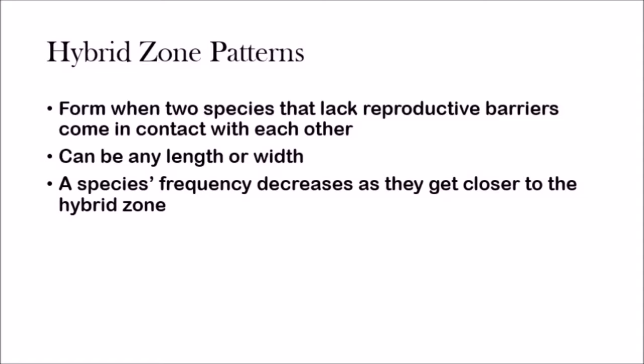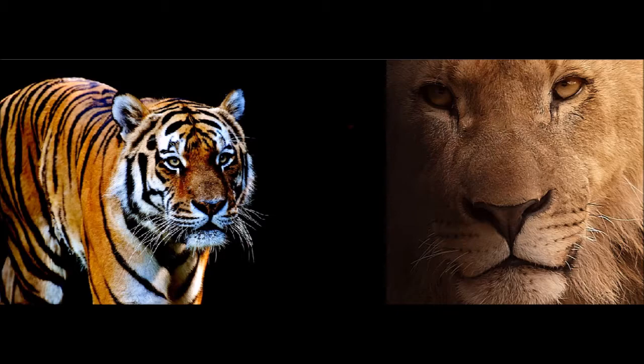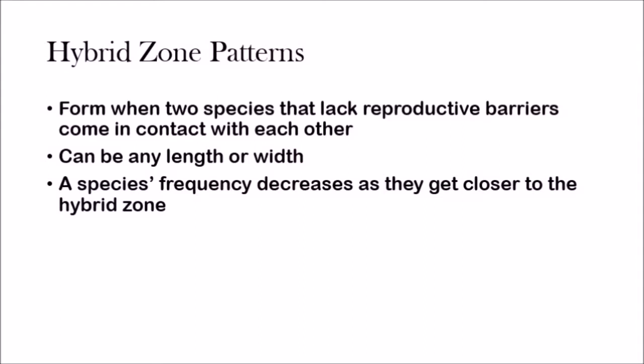Now remember, these are two different species. It's not like one chimpanzee mating with another chimpanzee in another population — it's two separate species which have different genetic material. The hybrid zone itself can be any length or width. The interesting thing with hybrid zones is that a species' allele frequency decreases as they get closer to the hybrid zone.